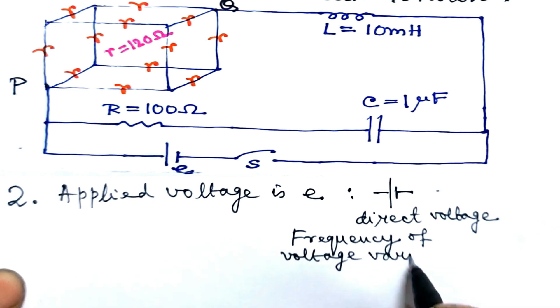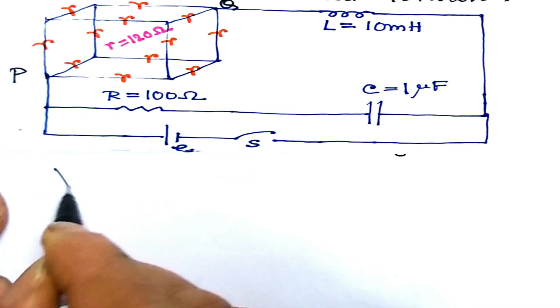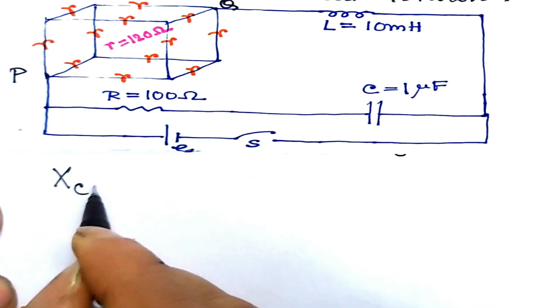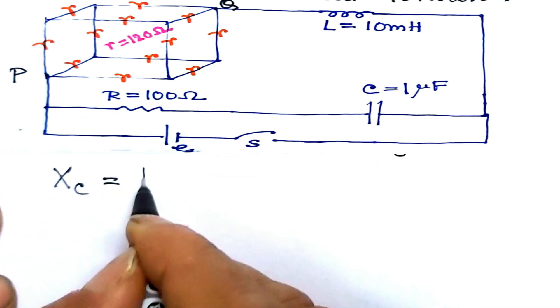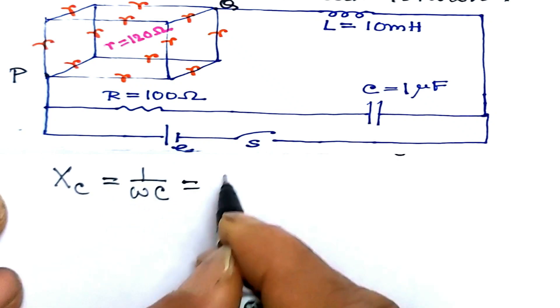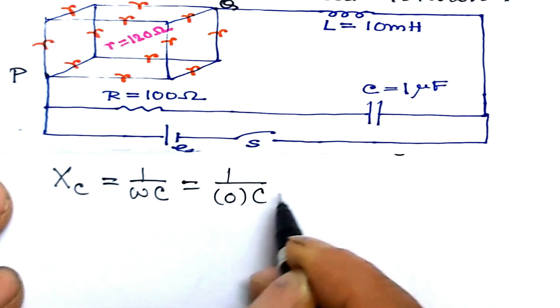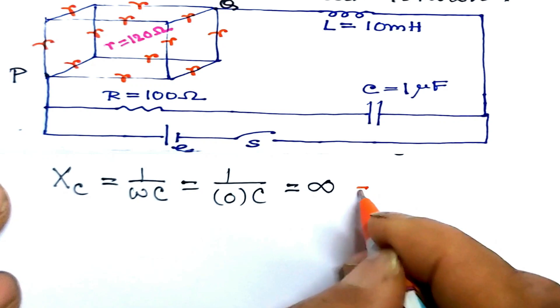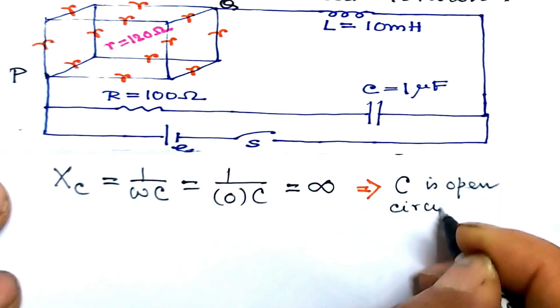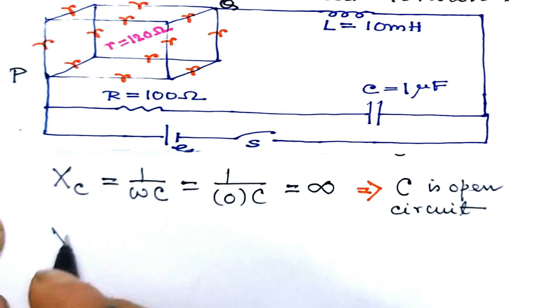The reactance of capacitance c is xc equal to 1 by omega c. With omega equal to 0, it is infinity. This implies that c is open circuit.